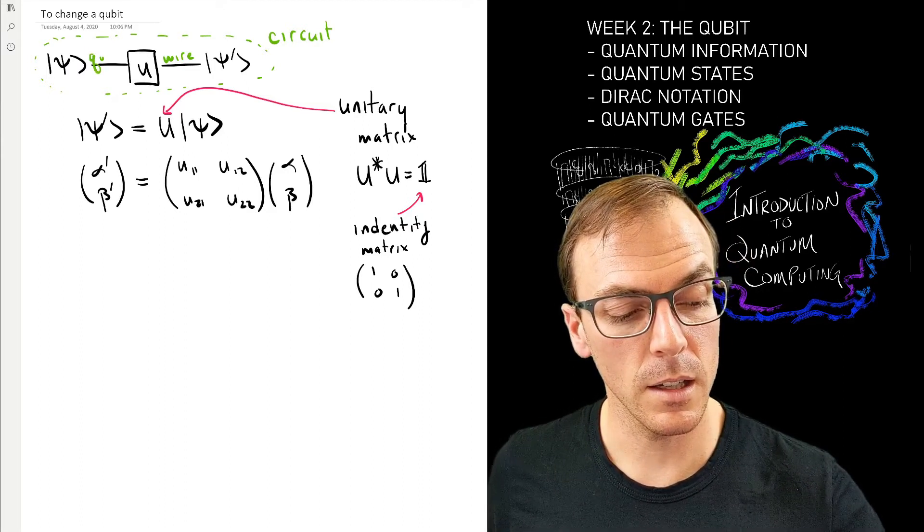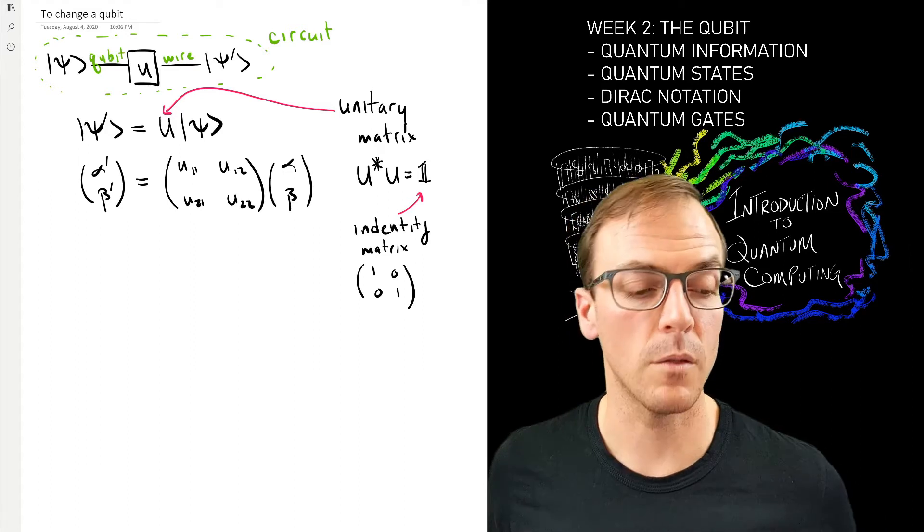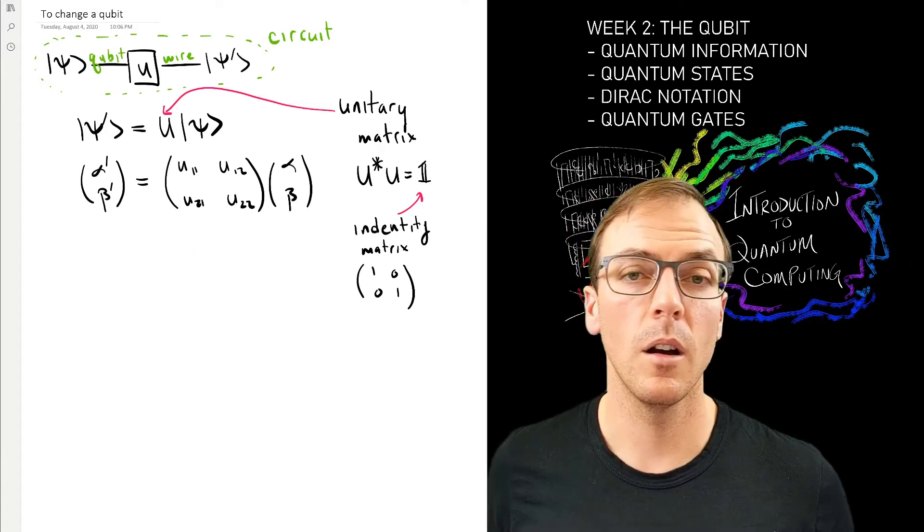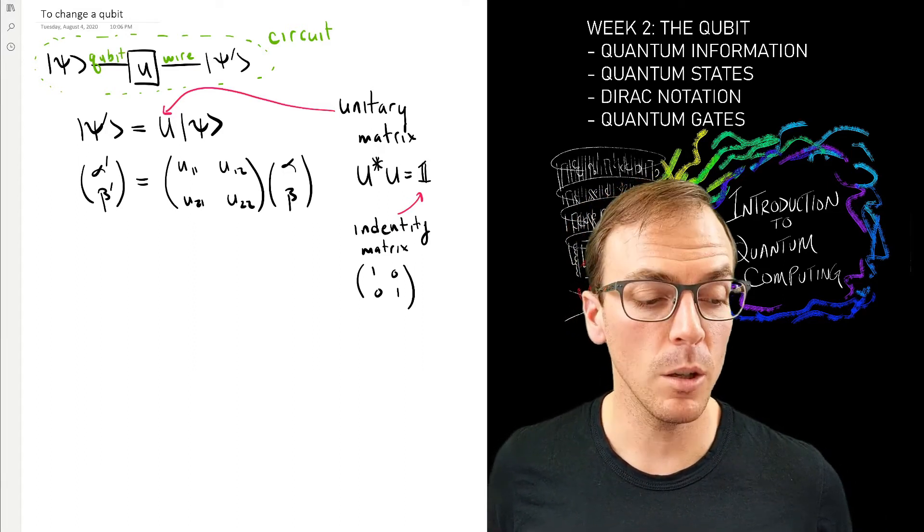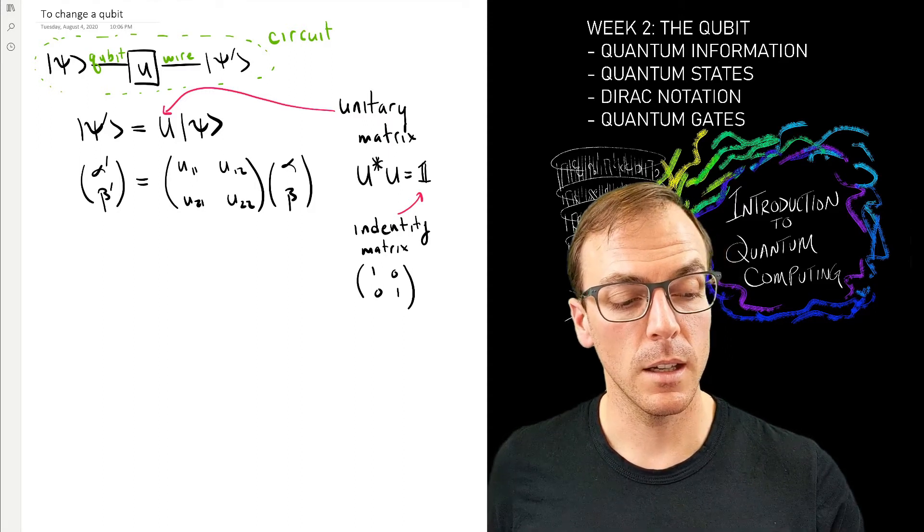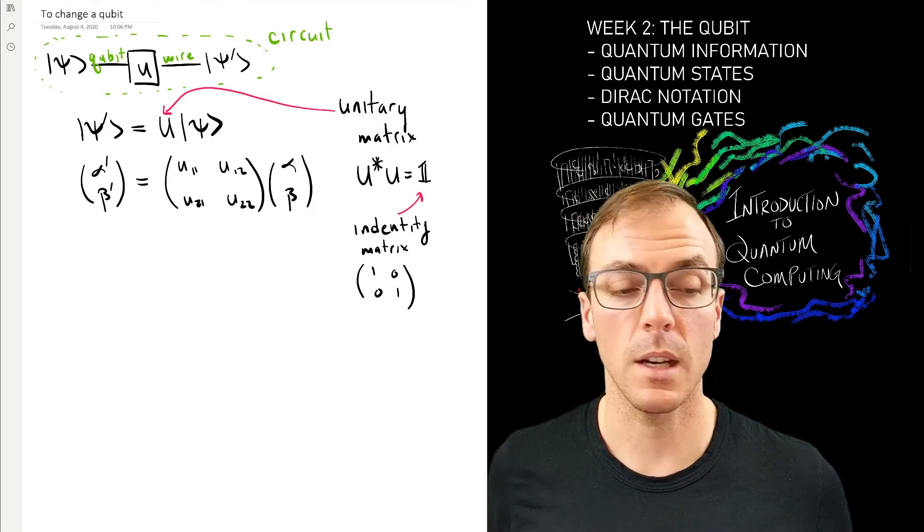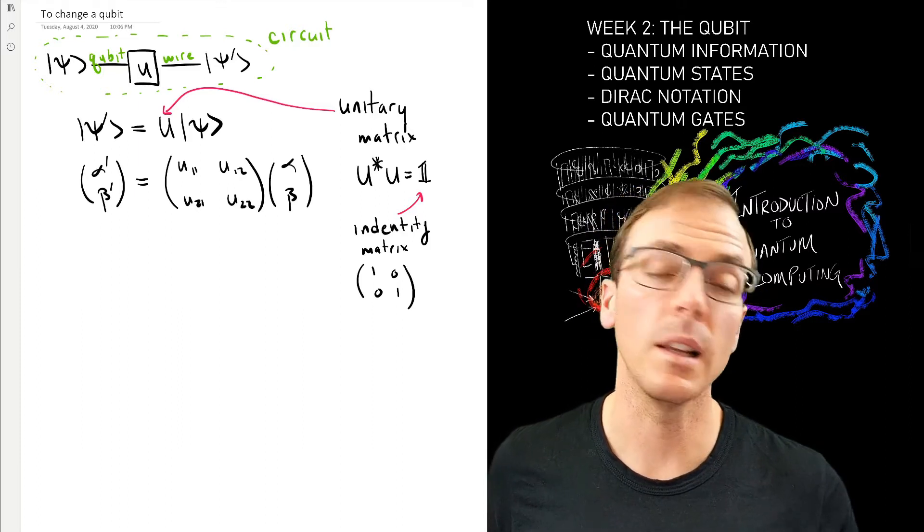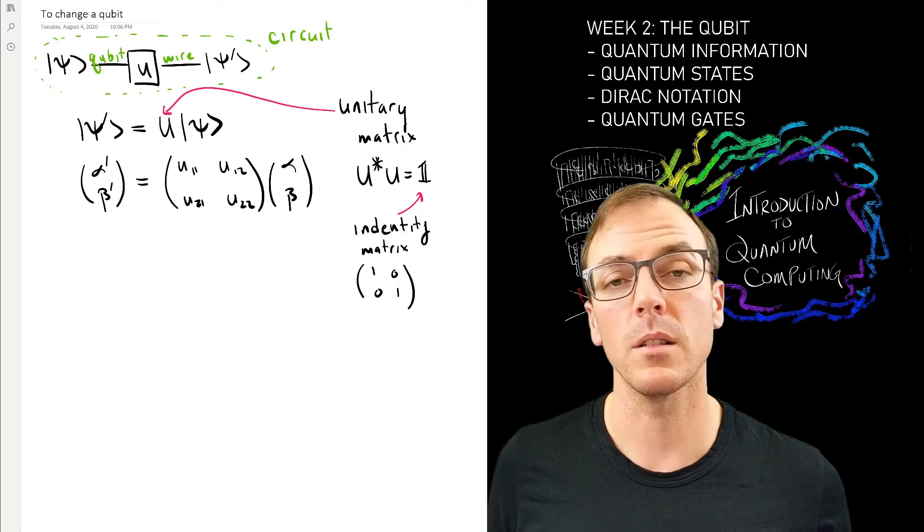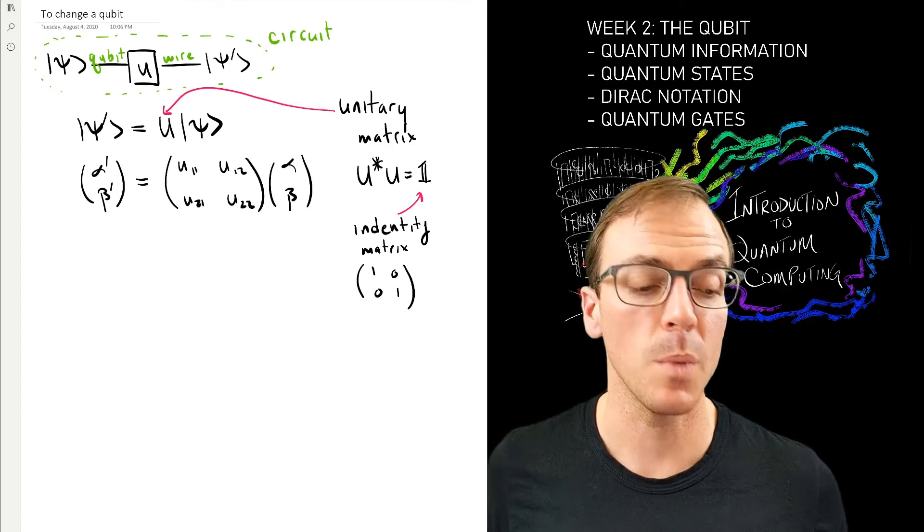The wire represents the physical qubit, the boxes represent how the state changes, and at any point in time I can label the wire with whatever state the qubit happens to be in.